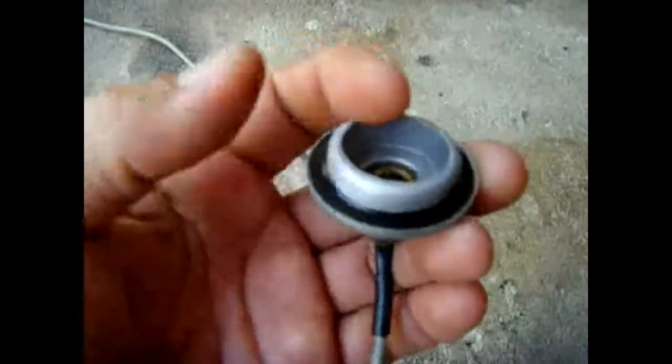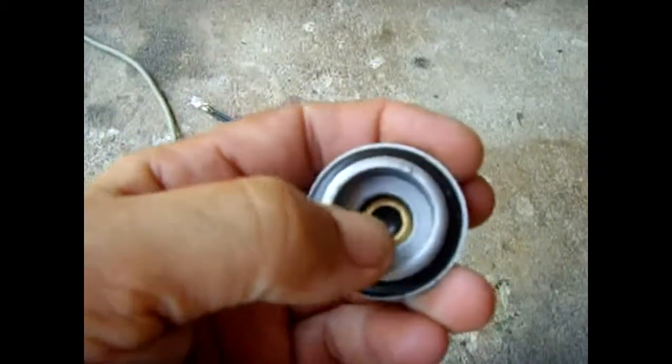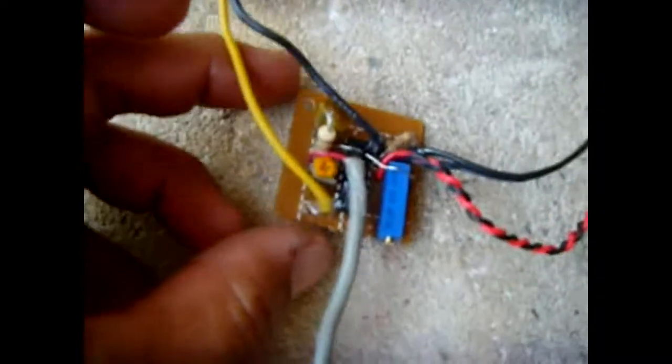So what I did is I drilled a hole and threaded the oil drain plug. This will go underneath the scooter, and I have it set right now for about 210 degrees.